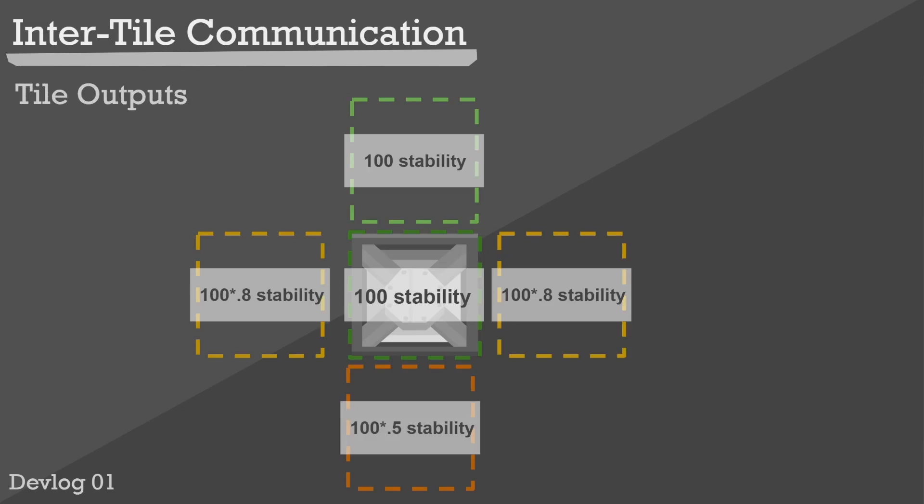Each tile will project its data onto adjacent tiles. The tile's own stability will be multiplied by certain constants in order to determine the amount of stability changes in each adjacent tile.